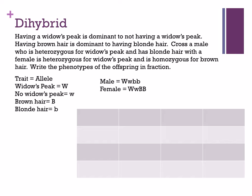Using the FOIL method: F stands for first — the first of each type of letter for the male, which gives capital W and lowercase b. O is the outside letters — capital W and lowercase b. I is the inside or inner letters — lowercase w and lowercase b. And L is the last — lowercase w and lowercase b.